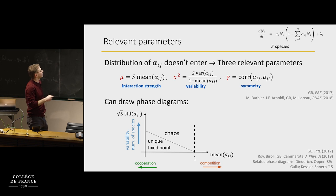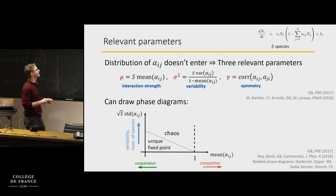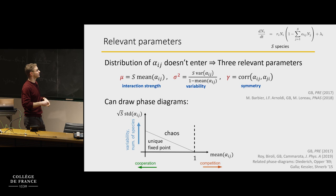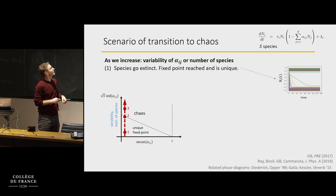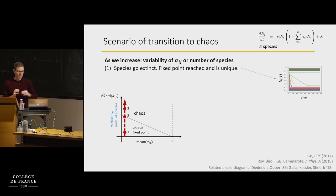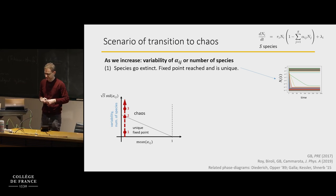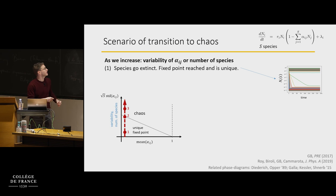You can start drawing phase diagrams. As a function of the mean alpha and the variability — how broad the distribution of alphas is — you see a fixed point phase and, in fact, a unique fixed point phase where whatever initial conditions you start with, you reach the same fixed point. And there is a chaotic phase.